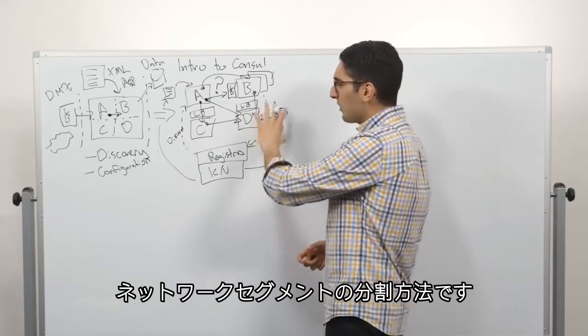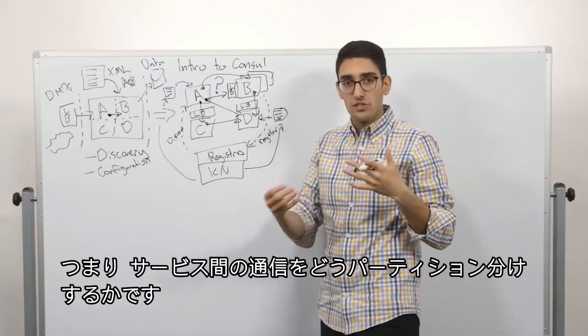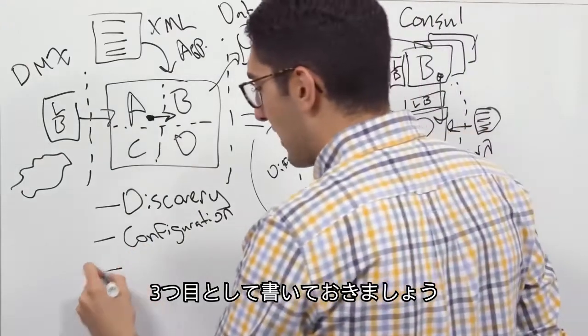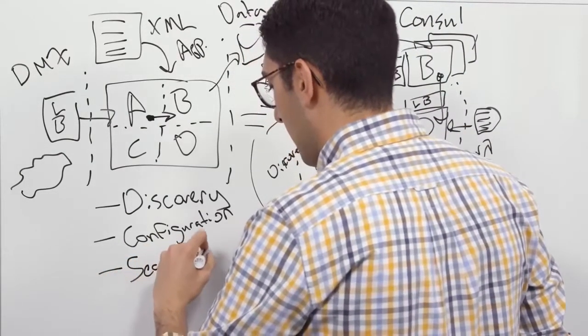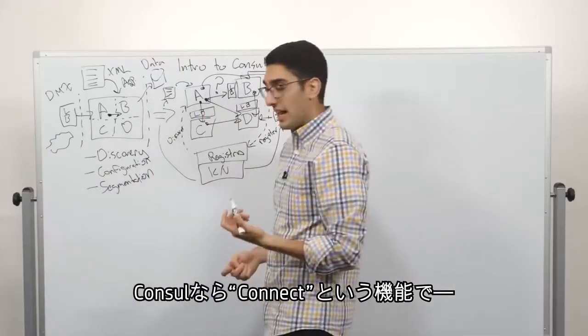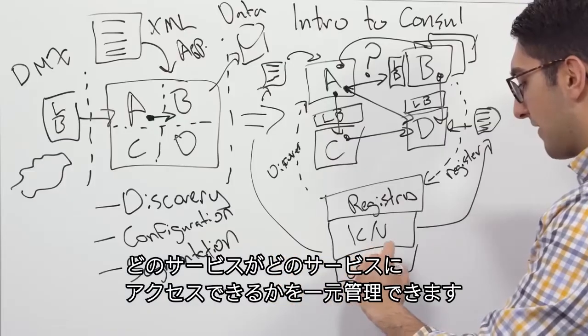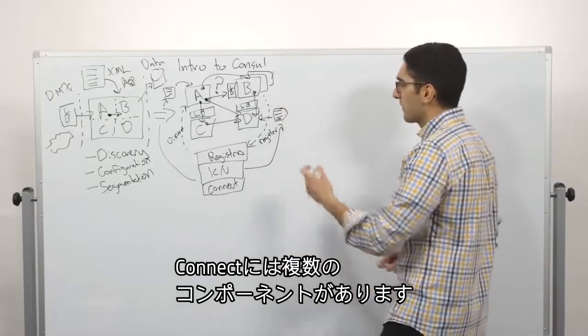So this third-level challenge now becomes, how do we think about segmenting this network? How do we partition which services are allowed to talk to which other services? So this third challenge becomes segmentation. And the way Consul deals with this is with a feature we call Connect.